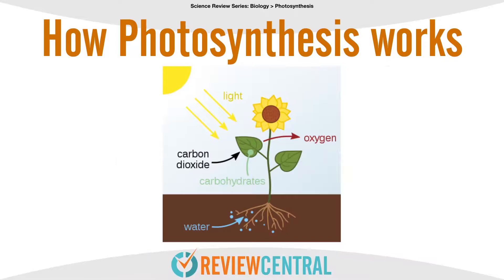The primary output of photosynthesis is carbohydrates, most commonly glucose, or sugar, which serves as food for the plant. Oxygen is another important by-product of photosynthesis. Oxygen gets released to the atmosphere for other organisms to consume, including humans.